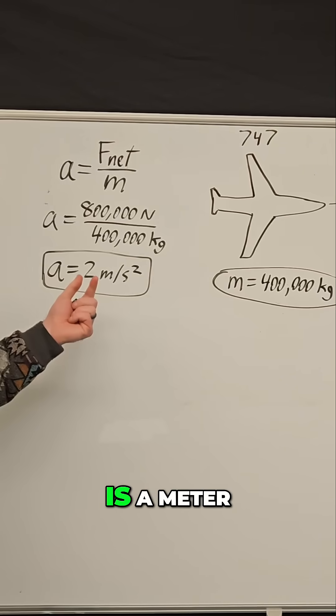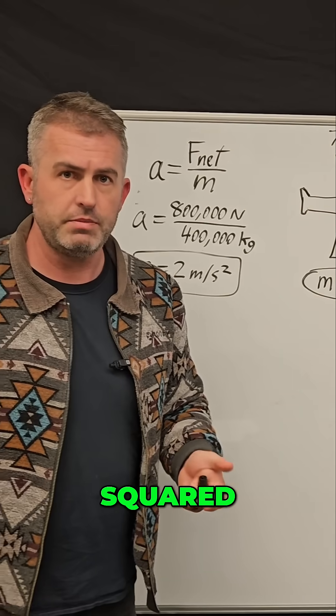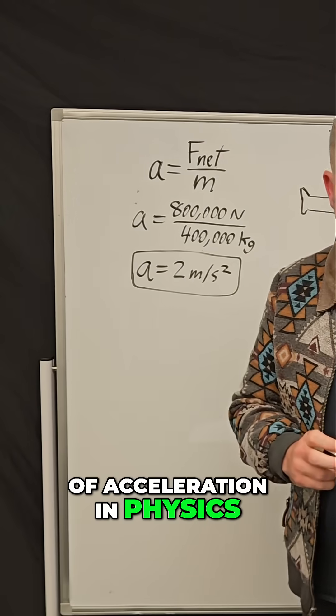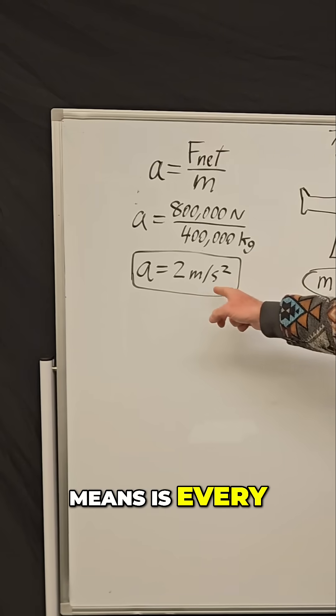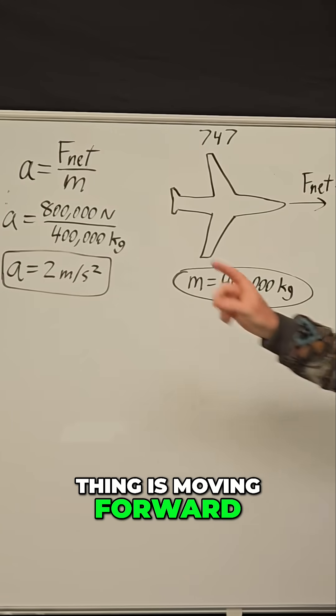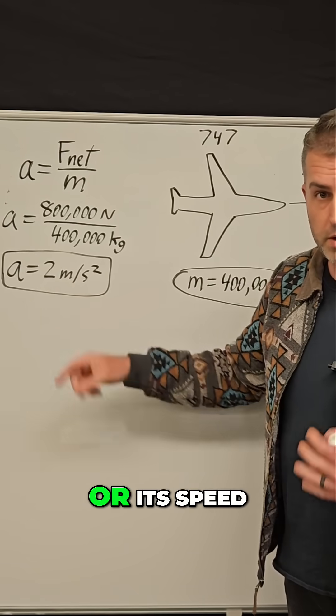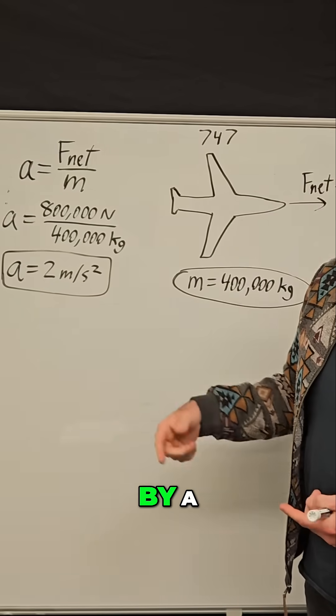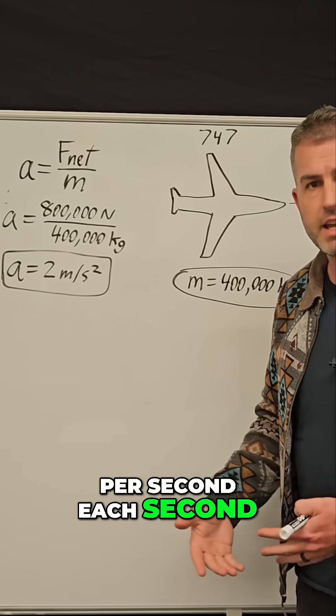So what is a meter per second squared? That's the standard unit of acceleration in physics. What that means is every second that goes by, every second this thing is moving forward, its velocity or its speed will increase by a rate of two meters per second each second.